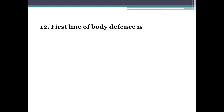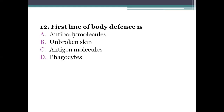Next question: the first line of body defense is option A, antibody molecules. Option B, unbroken skin. Option C, antigen molecules. Option D, phagocytes. The right answer is unbroken skin. Skin is the most effective barrier — most microorganisms fail to penetrate the skin, and it provides bactericidal secretions.